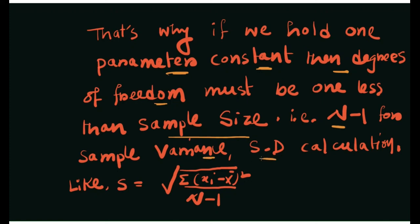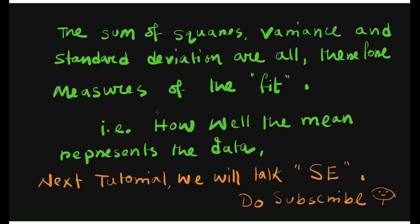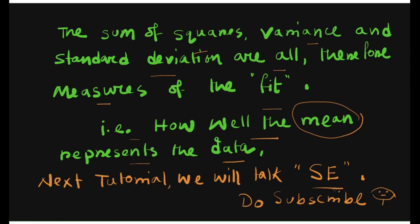I hope you understand the importance of the mean in model building, as well as variance, standard deviation, and sum of squared error. The sum of squares, variance, and standard deviation are all measures of how well the mean represents the data. The mean is the simplest model in statistics for fitting your data. In the next tutorial we'll talk about standard error — till then, stay tuned and subscribe to the channel.